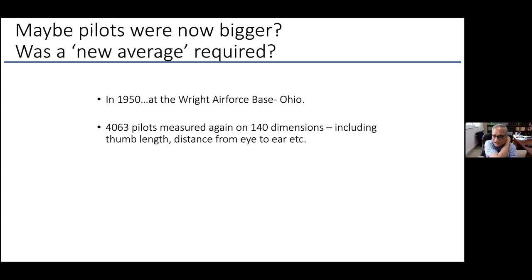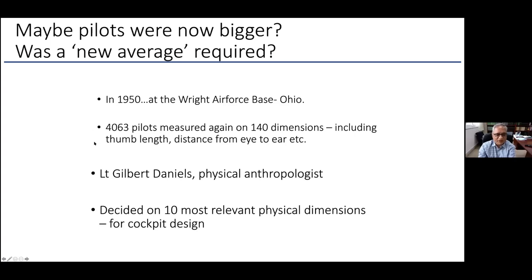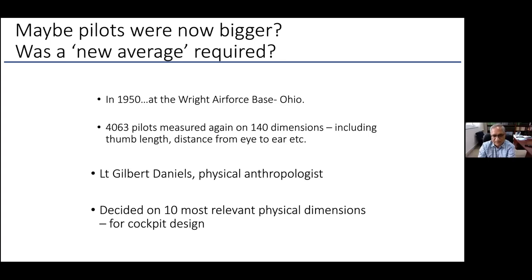They wondered if pilots had grown since the old average was created. So in 1950, at the Wright Air Force Base in Ohio, over 4,000 pilots were measured in 140 dimensions — including thumb length. This was done by Lieutenant Gilbert Daniels, a physical anthropologist, who decided on the 10 most relevant dimensions for cockpit design. He got all these measurements down as mean values.